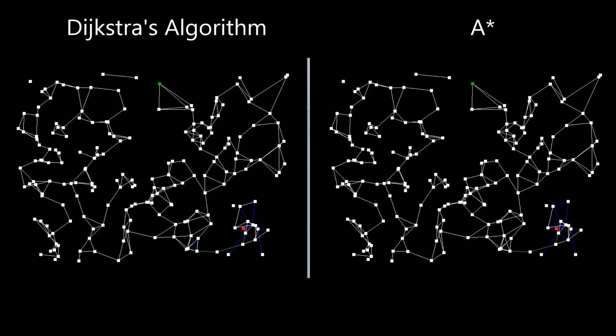So both algorithms are used to traverse graphs, which are basically points called nodes connected with lines called edges. And the red node is the start and the green node is the goal.